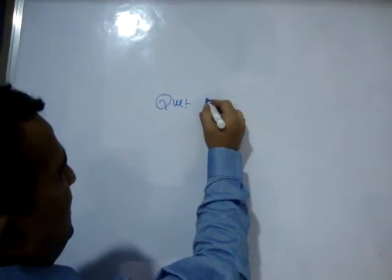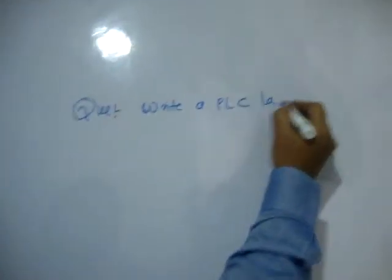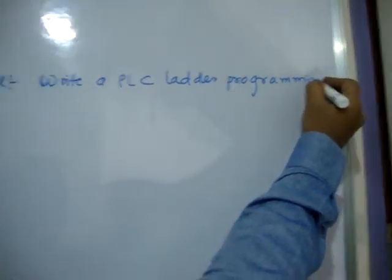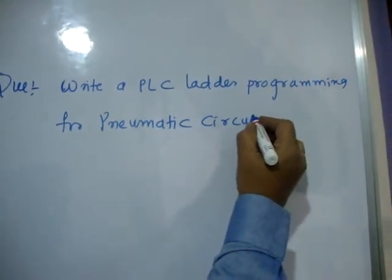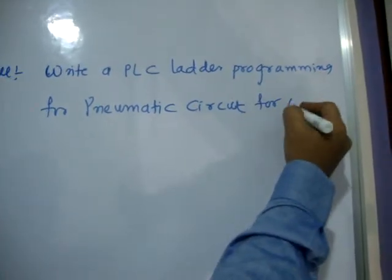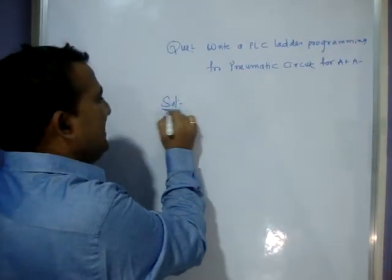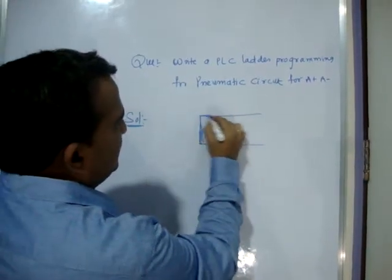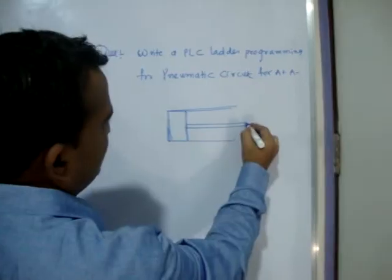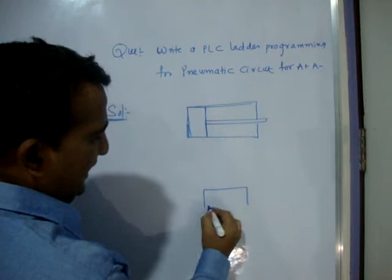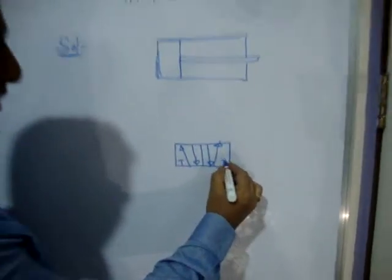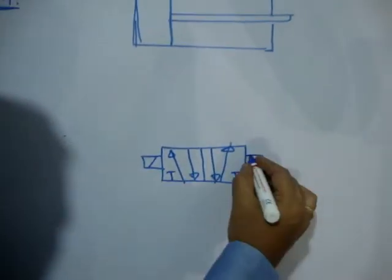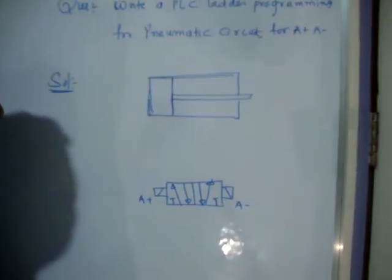In a pneumatic system, the question is: write a PLC ladder program for a pneumatic circuit, especially for A-plus and A-minus. First there are two parts. In the pneumatic circuit, I will take a double acting cylinder. I will take a 5/2 solenoid valve — both sides have a solenoid. This side is called A-plus and this side is called A-minus.